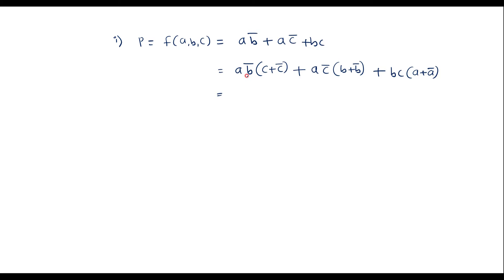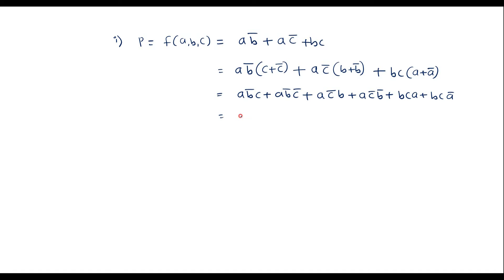Let me simplify by applying the distributive law. AB̄(C + C̄) expands to AB̄C + AB̄C̄. AC̄(B + B̄) expands to AB̄C̄ + ... giving us AC̄B + AC̄B̄. BC(A + Ā) expands to ABC + ĀBC. Writing in proper order with A as MSB and C as LSB, we get: AB̄C + AB̄C̄ + ABC̄ + AB̄C̄ + ABC + ĀBC.